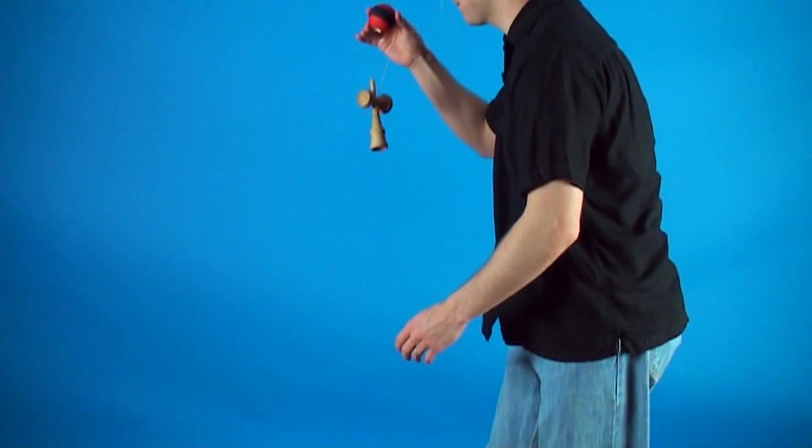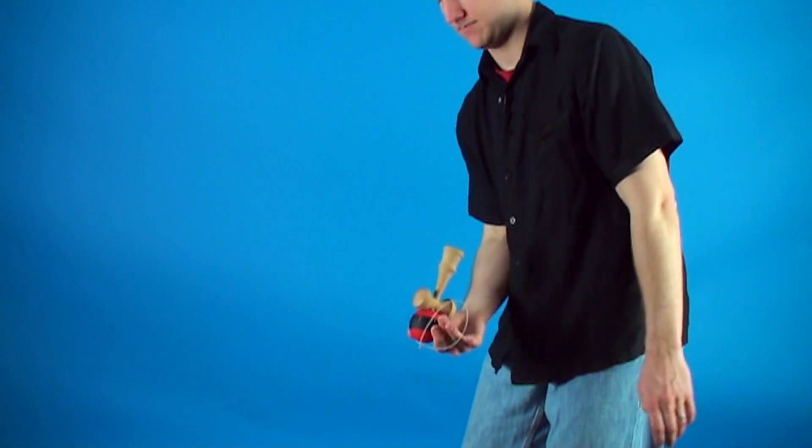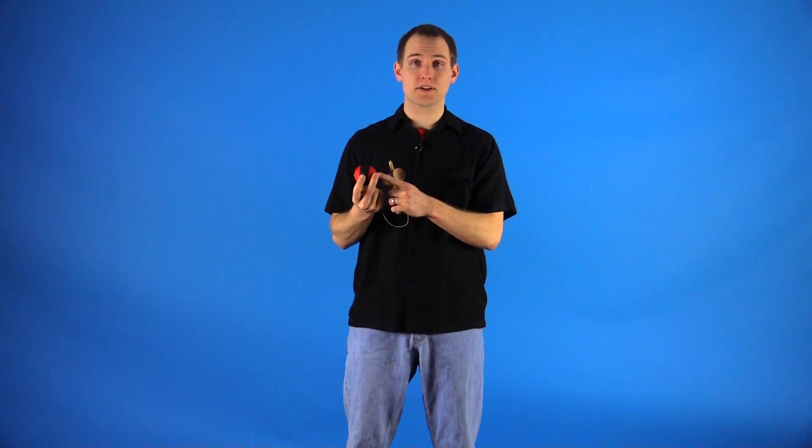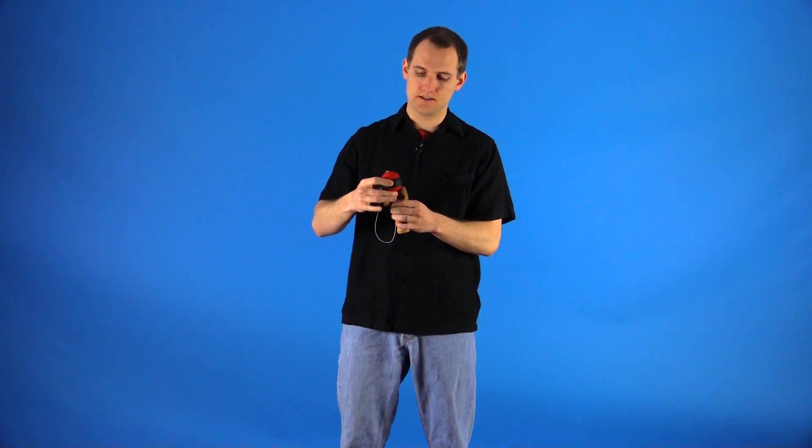Then you are going to take the Tama and you are going to try to spike it right onto the Kendama. To do this, you are going to use again your middle finger as a guide, aim it, and use that as your aim to slide it right onto the spike.